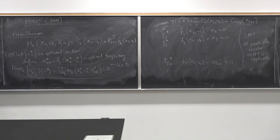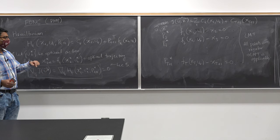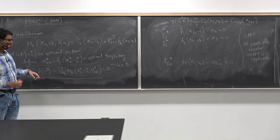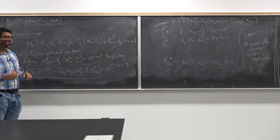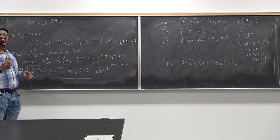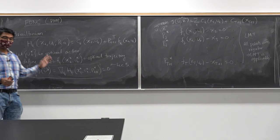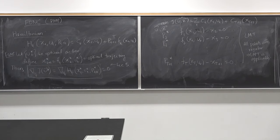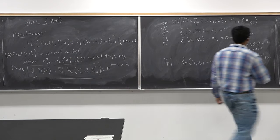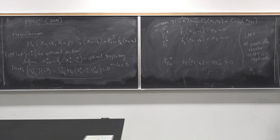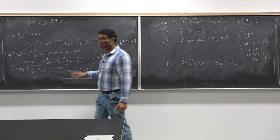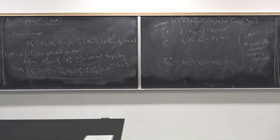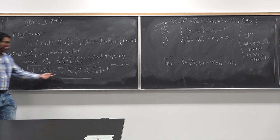In assignment 6, which is due after Thanksgiving, I am asking you to derive the backpropagation algorithm for finding the optimal weights for a neural network using this approach. You will get some practice deriving the backpropagation algorithm. Wherever in the backpropagation algorithm I had used the gradient of J, you can replace it with the gradient of u_t of H_t — that is the only change from the algorithm discussed in the previous class, because these two terms are exactly the same.